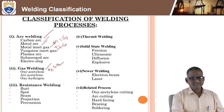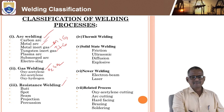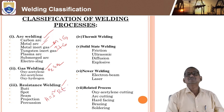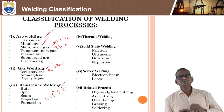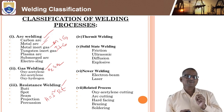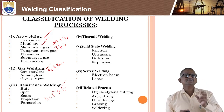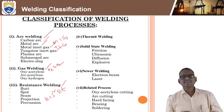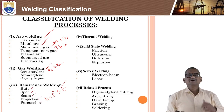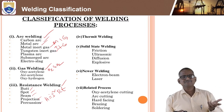Resistance welding operates on the principle that heat generated equals I²RT, where I is current, R is resistance, and T is time. It is subdivided into butt welding, spot welding, seam welding, projection welding, and precaution welding.